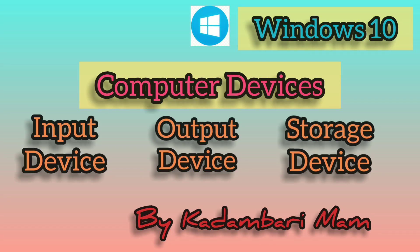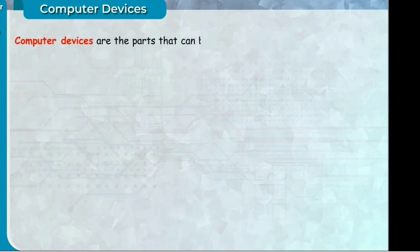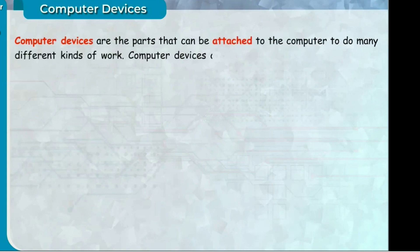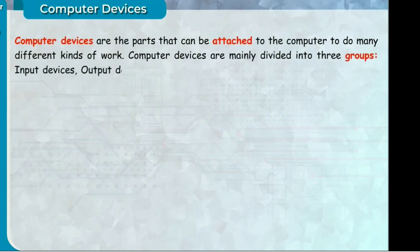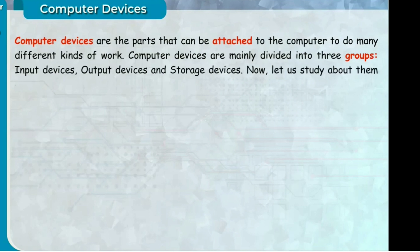Hello everyone, today we will be going to know about computer devices. Computer devices are the parts that can be attached to the computer to do many different kinds of work. Computer devices are mainly divided into three groups: input devices, output devices, and storage devices. Now let us study about them one by one.